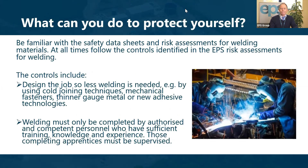So what can you do to protect yourself? Be familiar with the safety data sheets and the risk assessments for the materials that you're welding, and at all times follow the controls and recommendations given by your supervisor. Controls may include reducing the amount of welding undertaken — use cold jointing, use mechanical fasteners, weld lighter material to produce less fumes. Welding should only be completed by properly authorized and competent people who have had sufficient training, knowledge, and experience. Where apprentices are welding, they should be adequately supervised at all times.